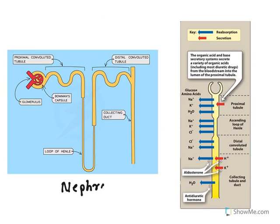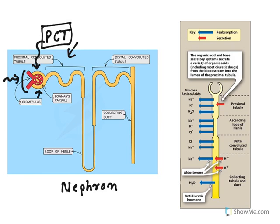Let us understand the functional regions of a nephron. Blood flows into the nephron through the glomerulus, a complex network of blood vessels encapsulated by Bowman's capsule. Near this, the nephron has a convolution called the proximal convoluted tubule — 'proximal' meaning it is closer to Bowman's capsule.